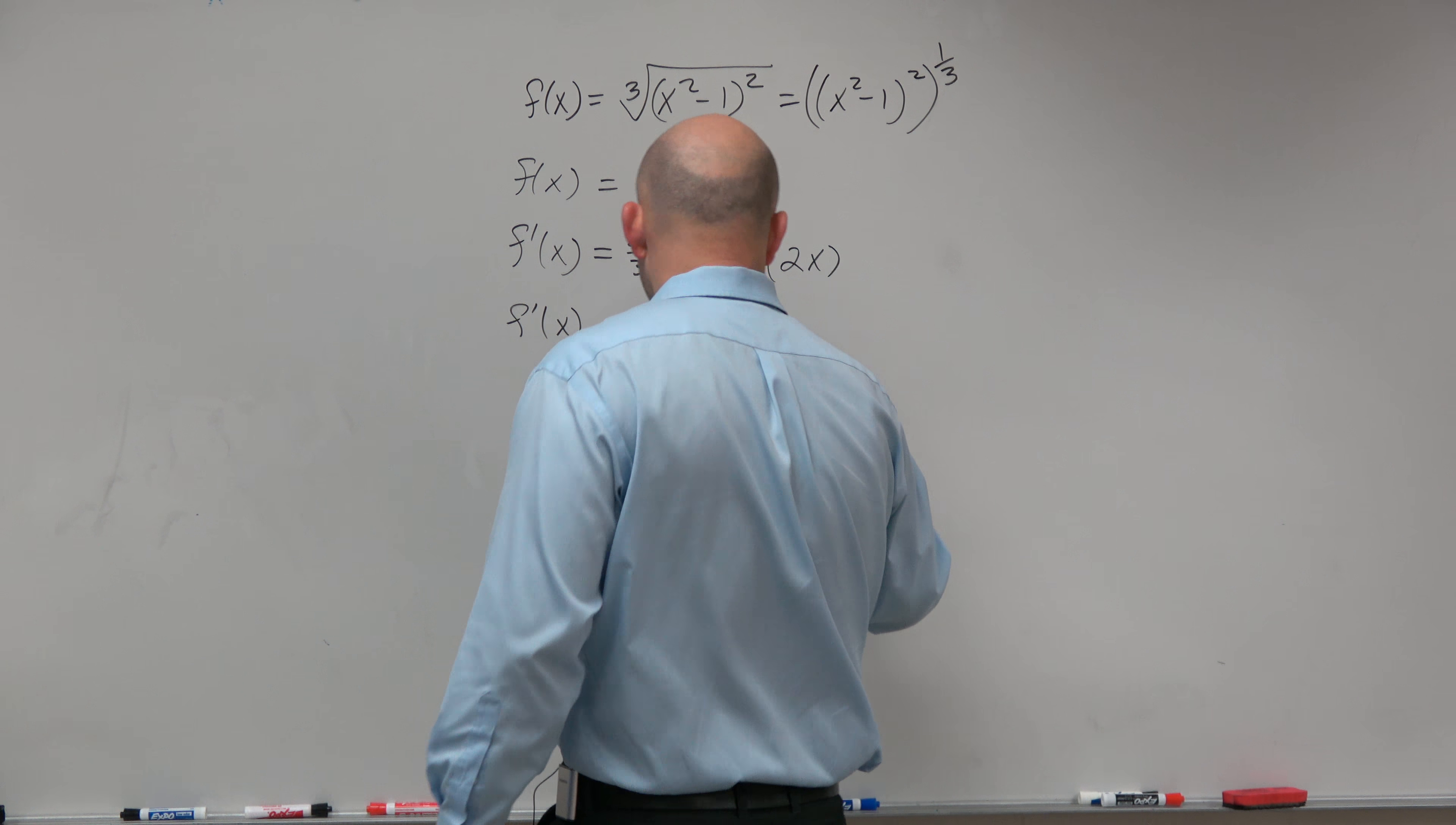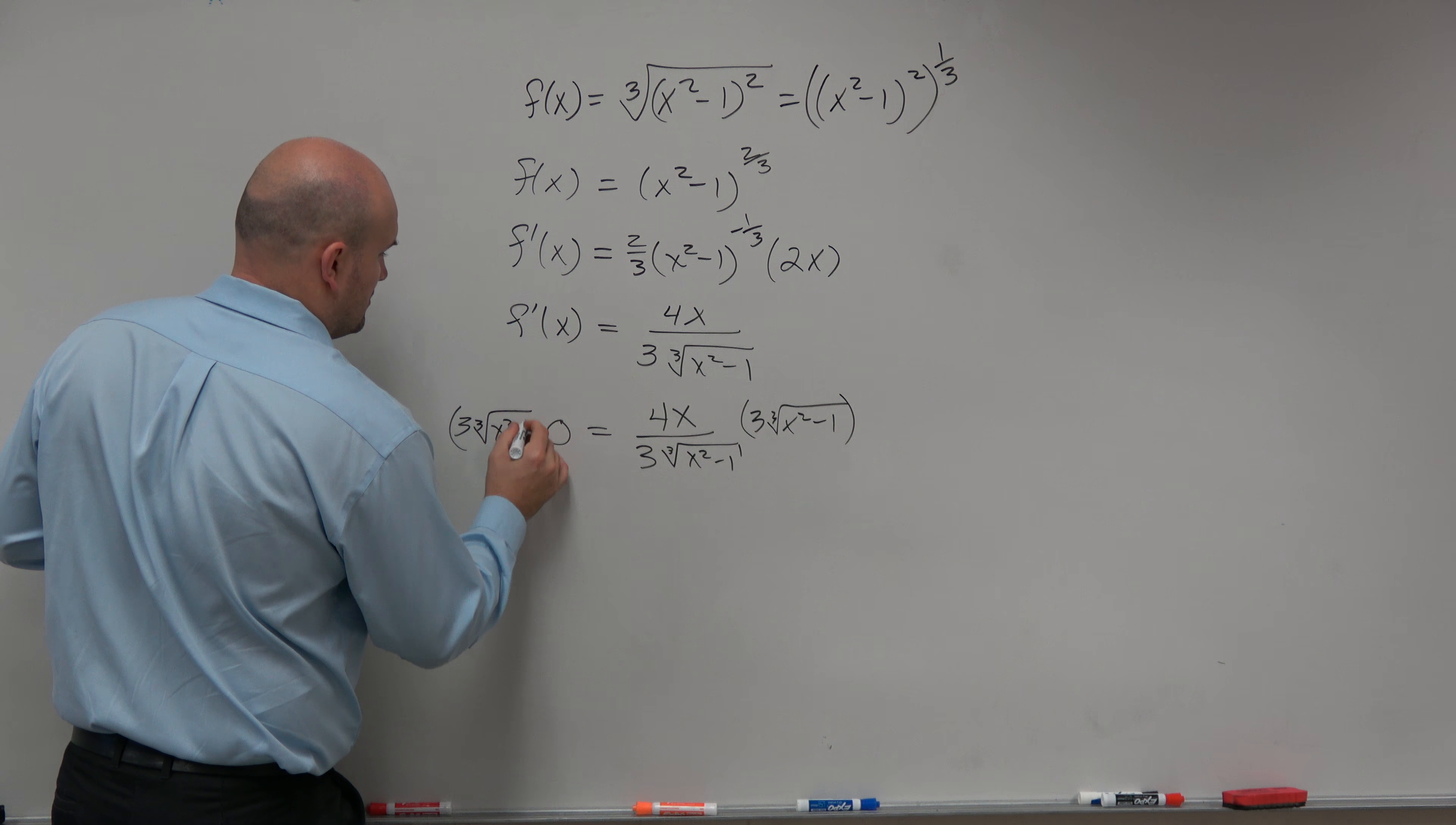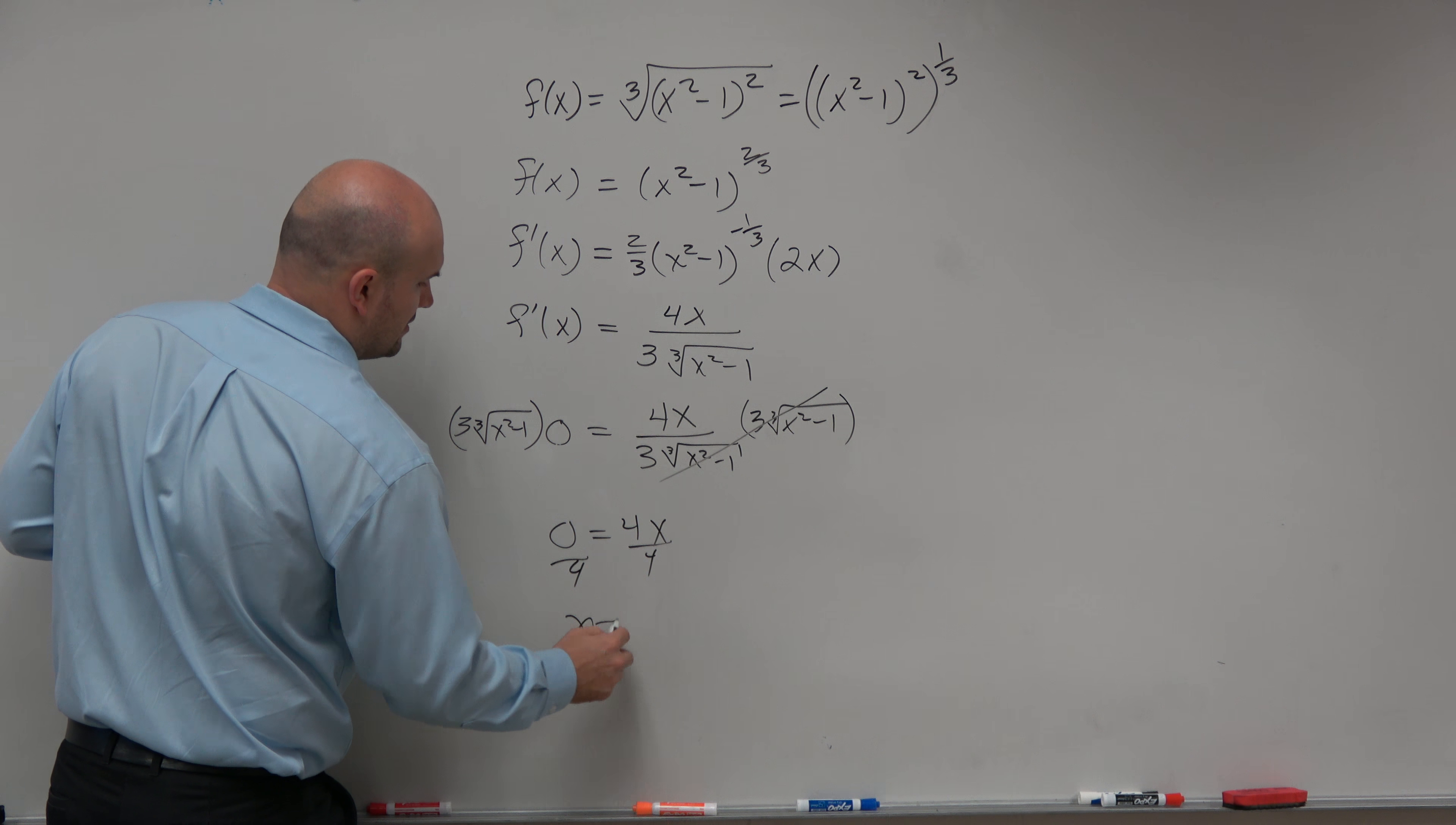So we would multiply by the denominator on both sides. I'm just going to write this kind of sloppy because hopefully you realize what's happening when we do that. That goes to 0, and that goes to 1. Divide by 4, divide by 4, x equals 0.